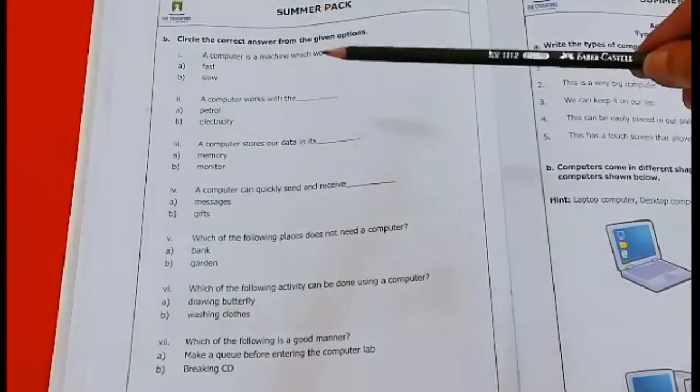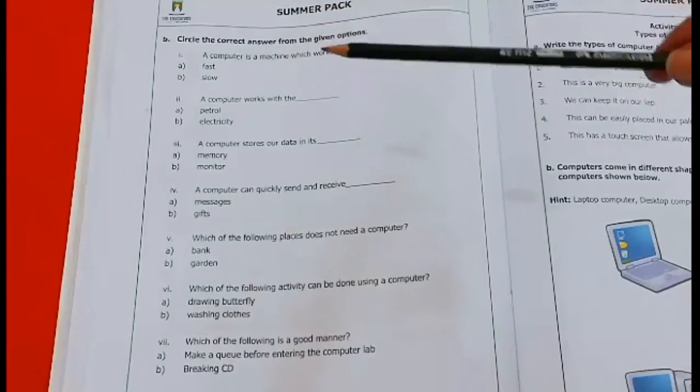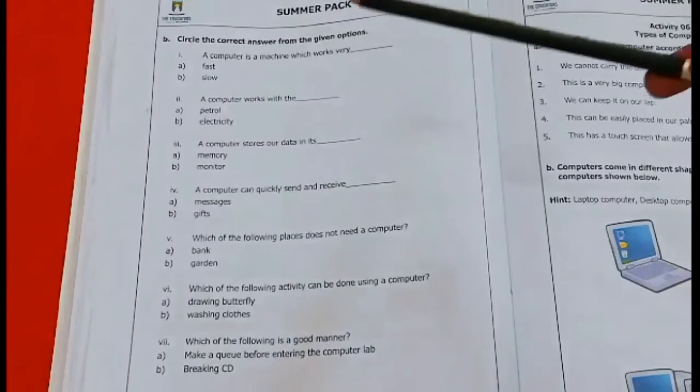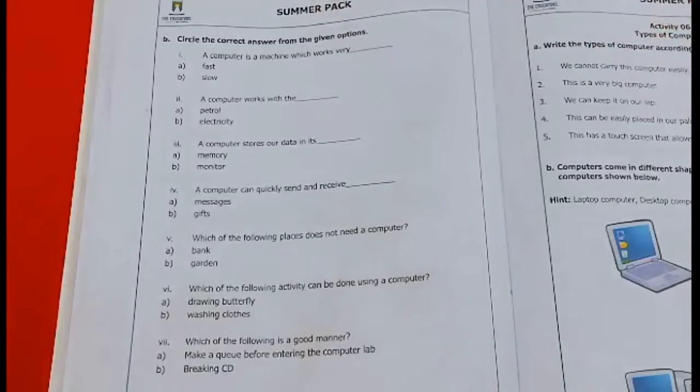Second, B, slow. So computer machine works very fast. Computer works very fast. So we will click fast and circle.